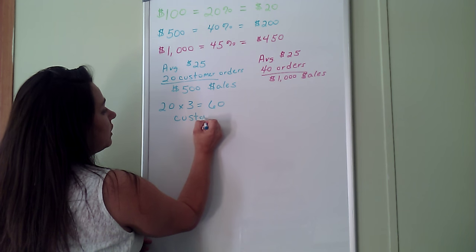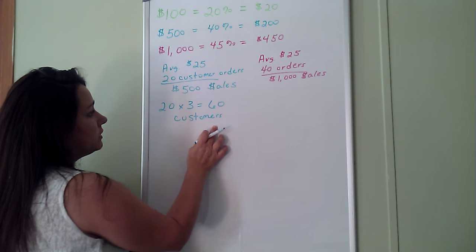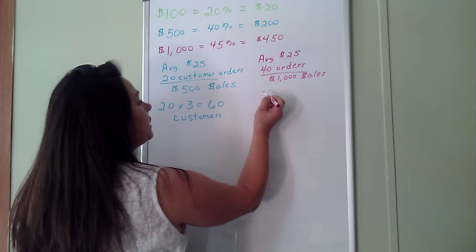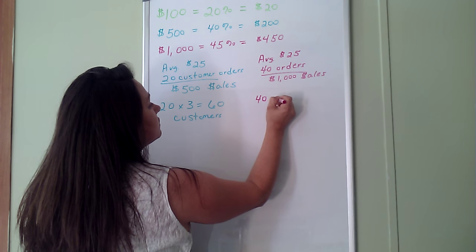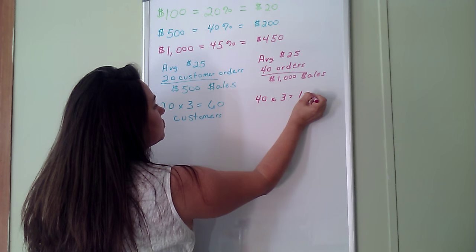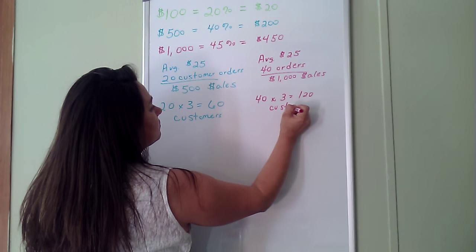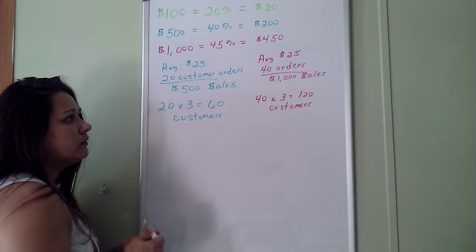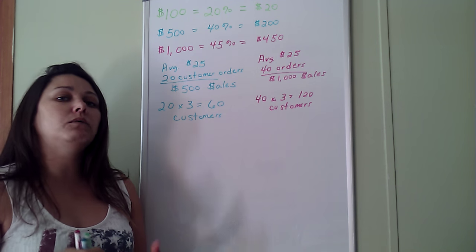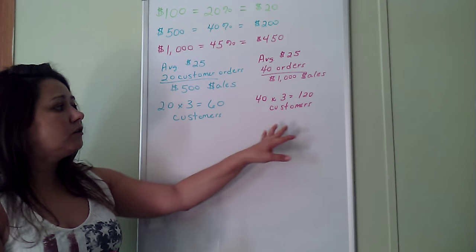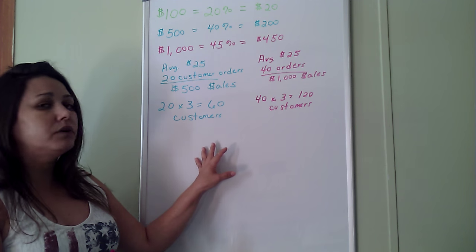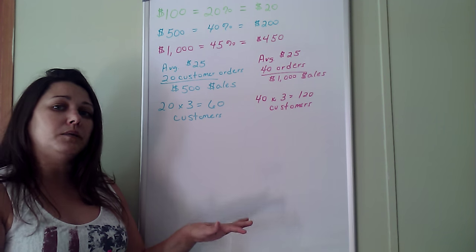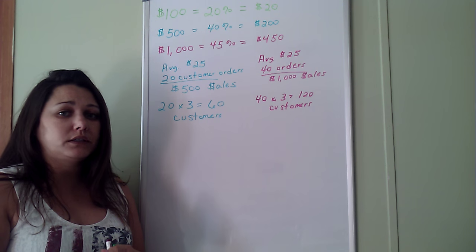In order to have a $1,000 order, you would double this. So you need 40 orders times three, resulting in 120 customers. Now, in order to do this, you might be thinking, how would I get either 60 customers or 120 customers? Will this happen overnight? No. This is going to be something that you will work towards and work your way up. Can it happen very quickly? If you put the work into it, it can.